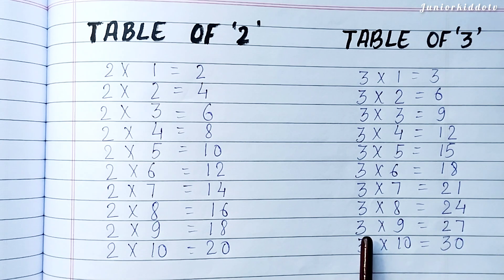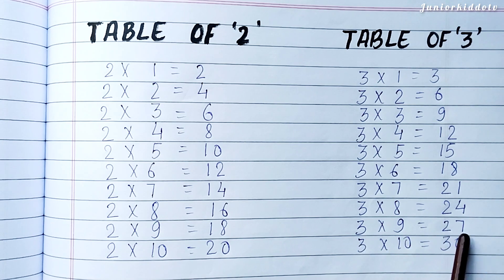Three Nines are Twenty Seven. Three Tens are Thirty.